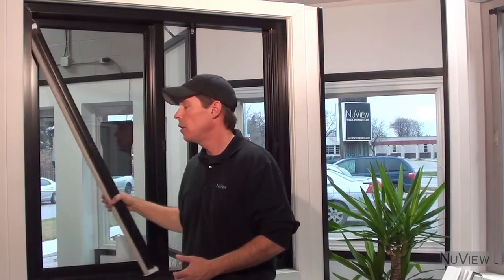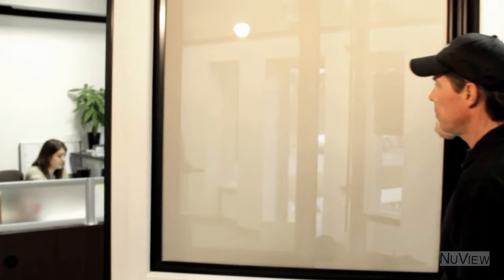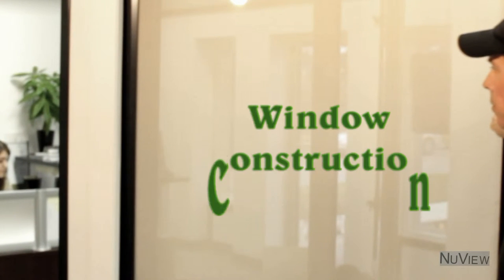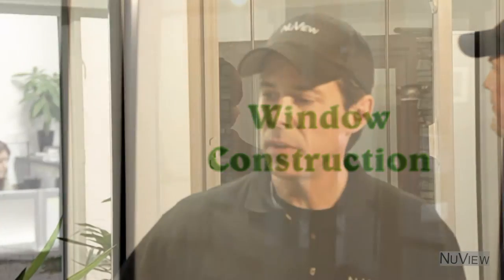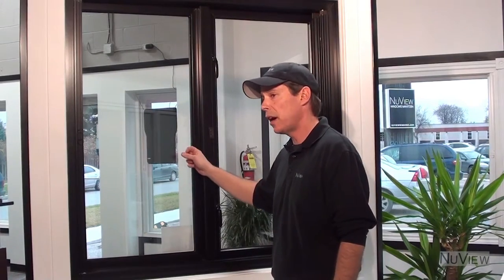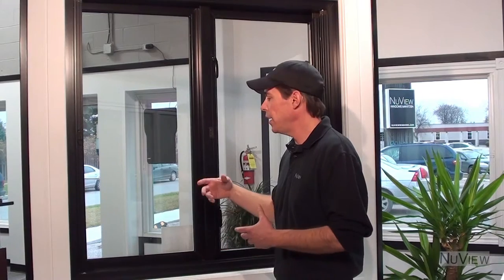Well, let's talk about the meat and potatoes of a window: the glass. NuView makes our own sealed units. We use two coatings of low-e glass on every sealed unit that we make. We use argon gas inside the sealed unit to create a very dead airspace so that it's much more efficient—less heat can radiate through.